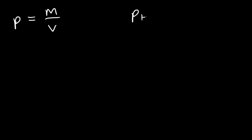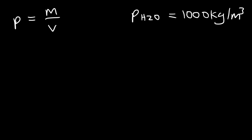The density of water is 1,000 kilograms per cubic meter. In physics, this is the value that you want to use. In chemistry, you'll see this value expressed as 1 gram per cubic centimeter.